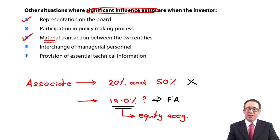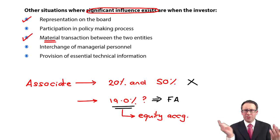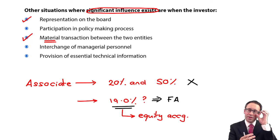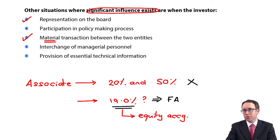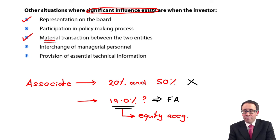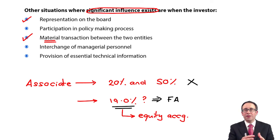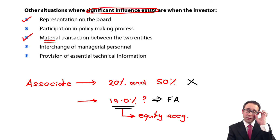The other indicator is interchange of managerial personnel — swapping your management. If you're putting your managers in place because that's been requested by the associate, then again you're going to have significant influence because you're making managerial decisions. And if you're giving technical information, that technical knowledge you are transferring is going to influence how that business operates, so that will also allow you to show that you have significant influence.